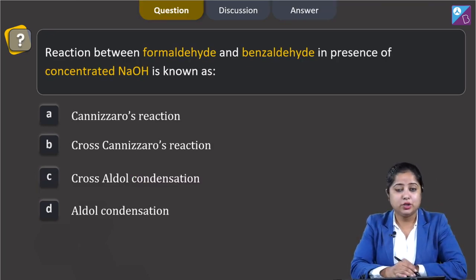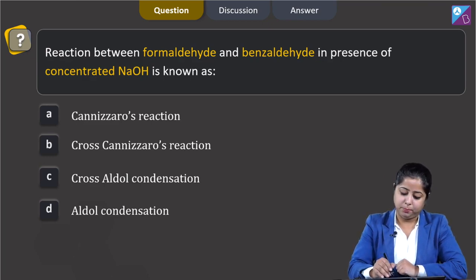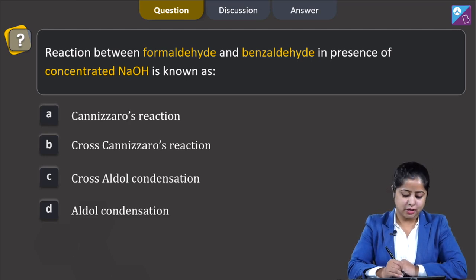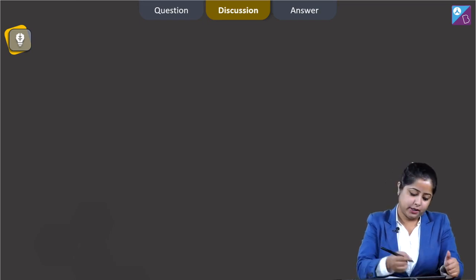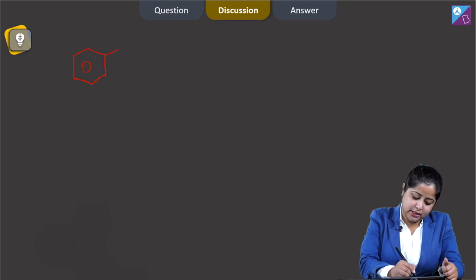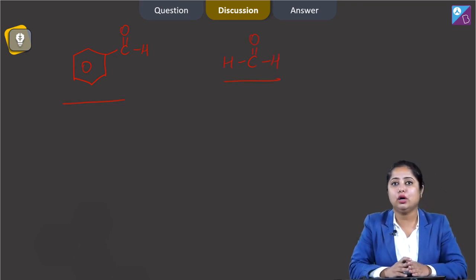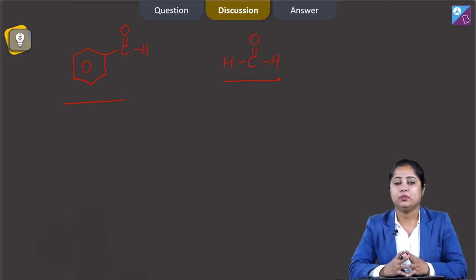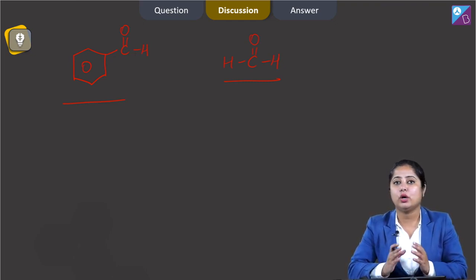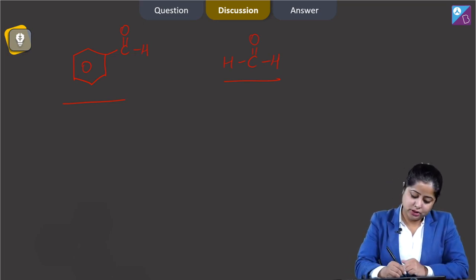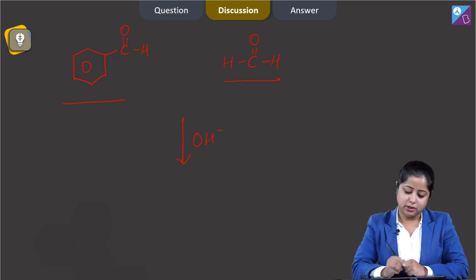Let us read the next question, students. Reaction between formaldehyde and benzaldehyde in the presence of concentrated NaOH is known as? The options are: Cannizzaro's reaction, cross Cannizzaro's reaction, cross Aldol condensation, or Aldol condensation. For this question, we have to draw the structures of benzaldehyde and formaldehyde. Benzaldehyde is benzene with a CHO group, and formaldehyde is H–C=O–H. Since both compounds do not contain alpha hydrogen, and aldehydes without alpha hydrogen undergo disproportionation reaction — that is, self oxidation and reduction — on heating with concentrated alkali.